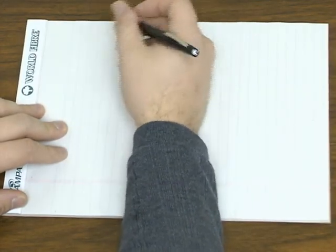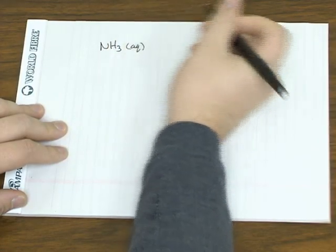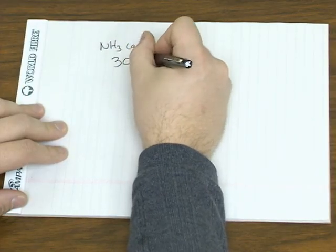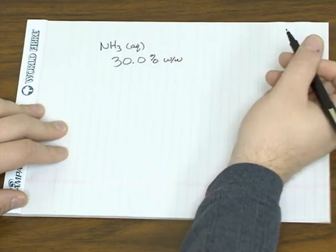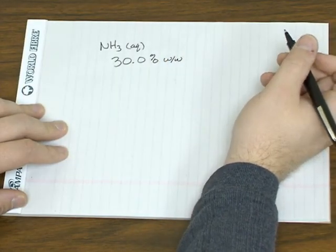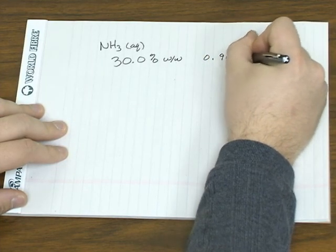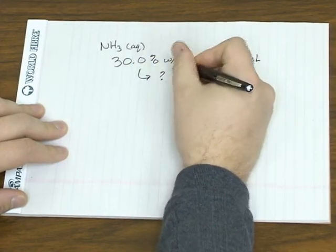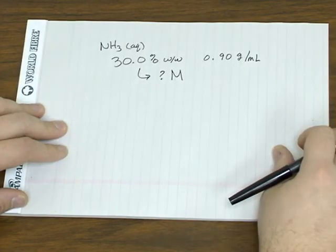For example, aqueous ammonia is often bought as a 30% solution by mass, which has a density of 0.9 grams per milliliter. Let's take that mass percent and figure out what the concentration would be in units of molarity.